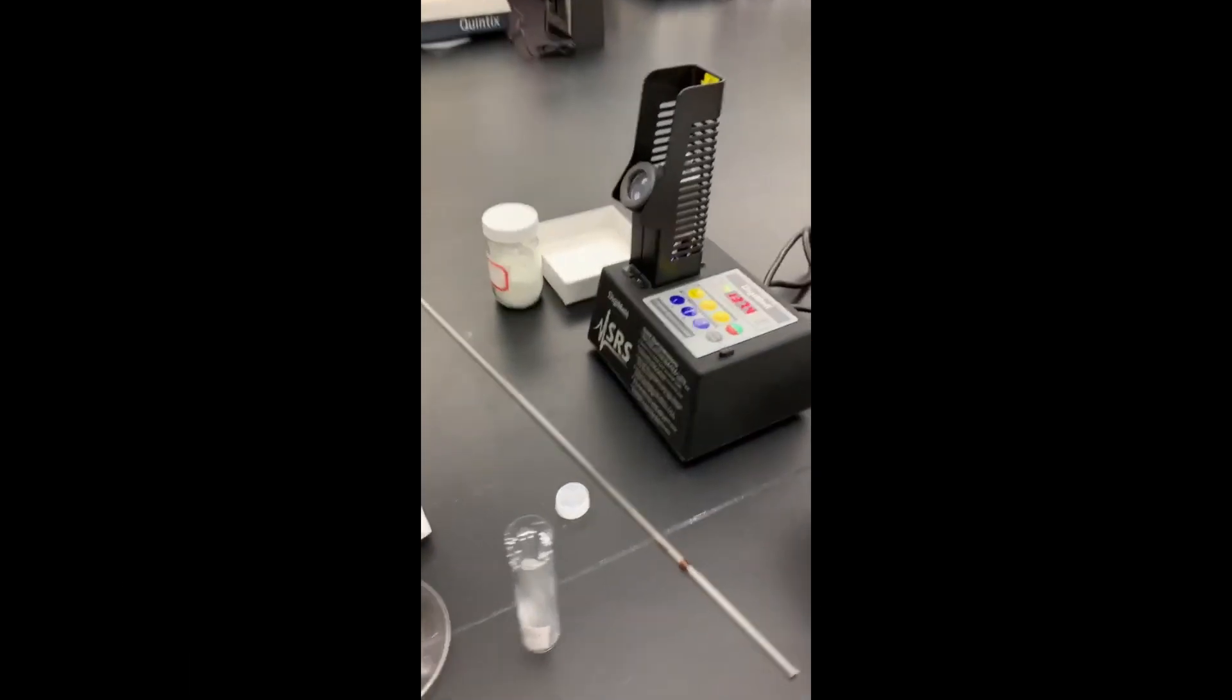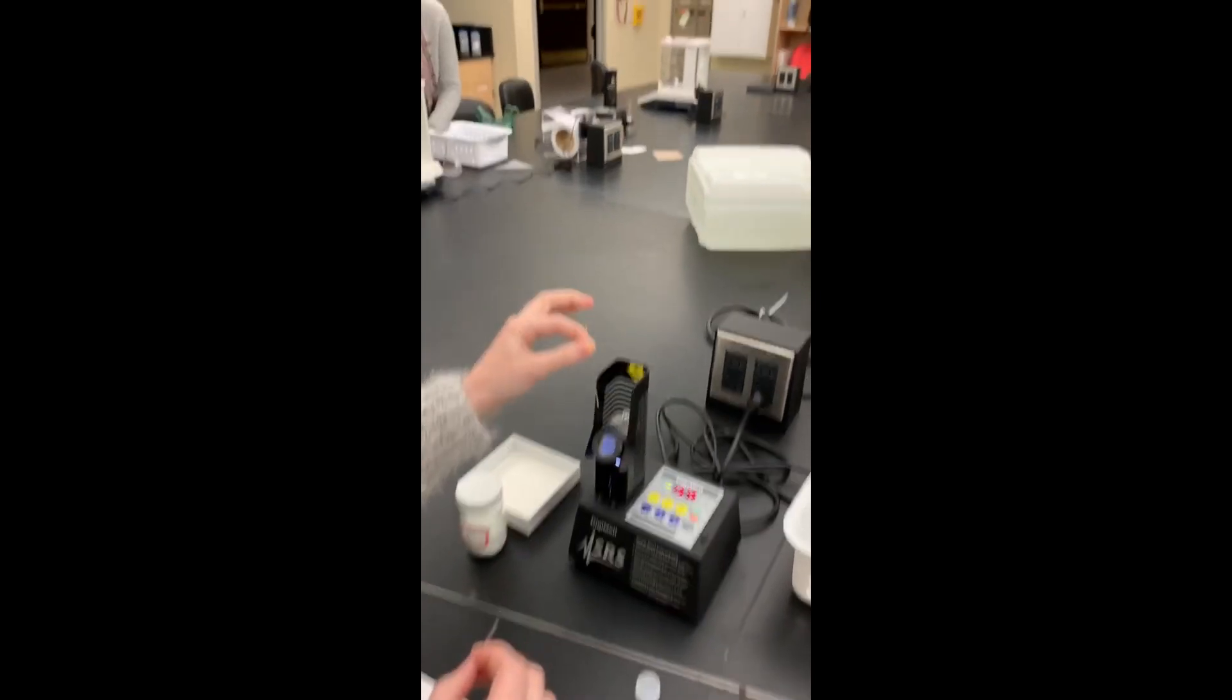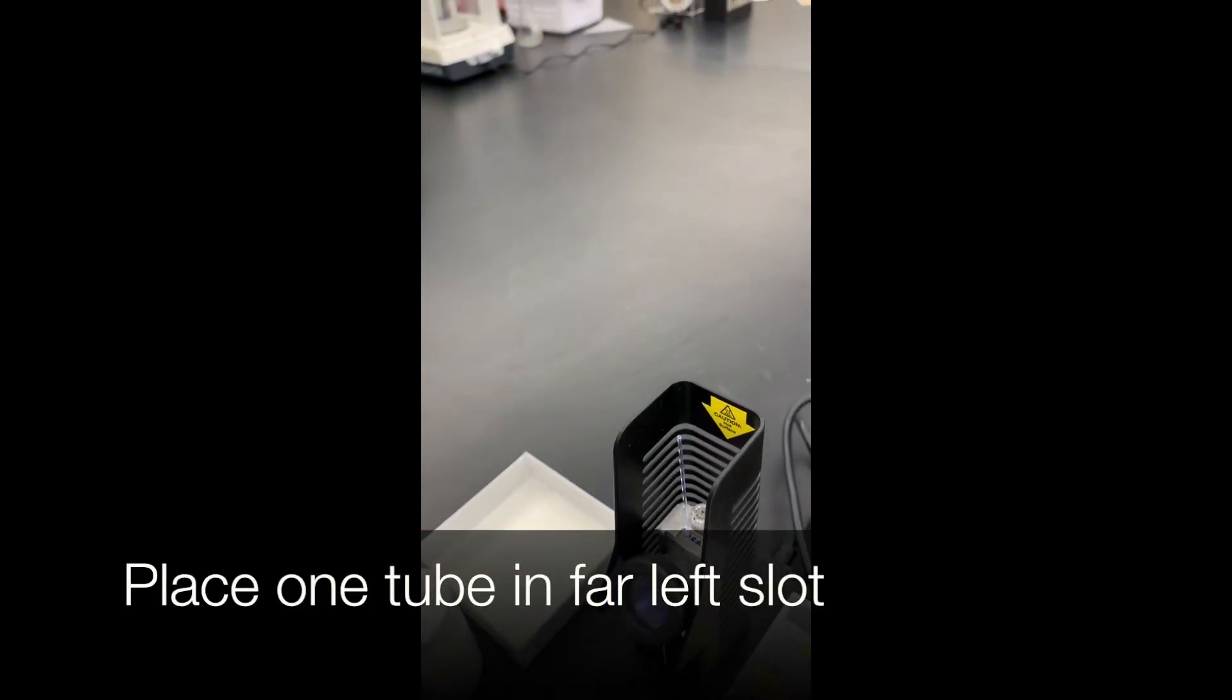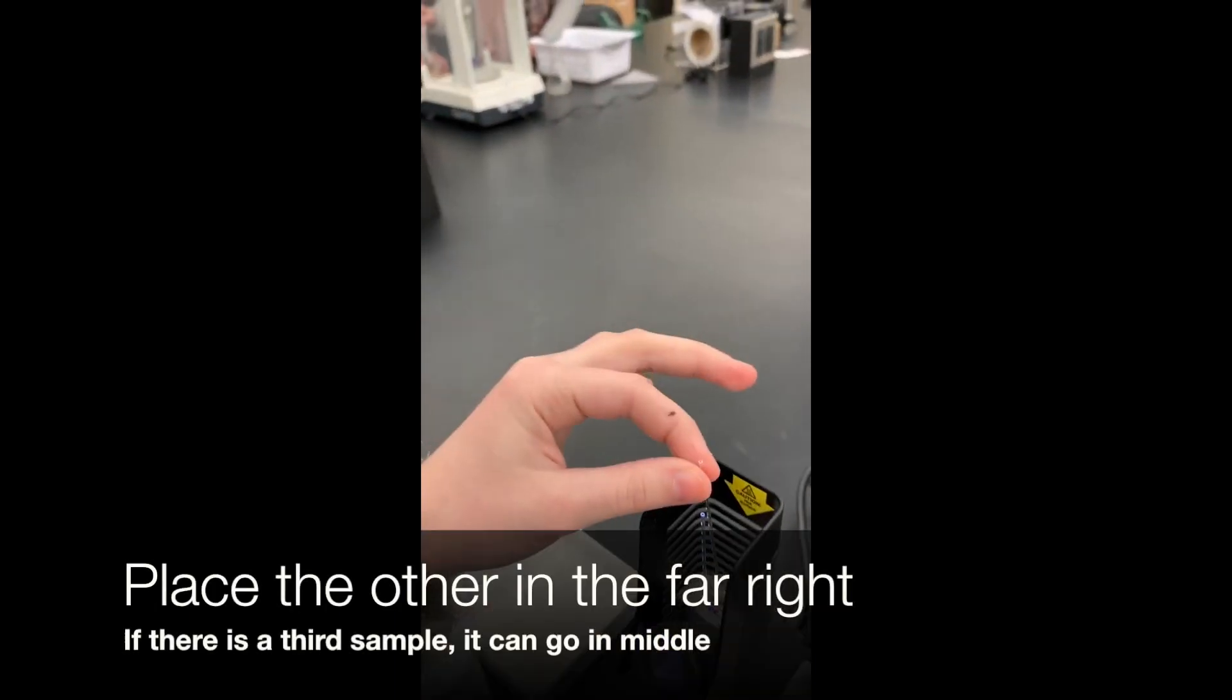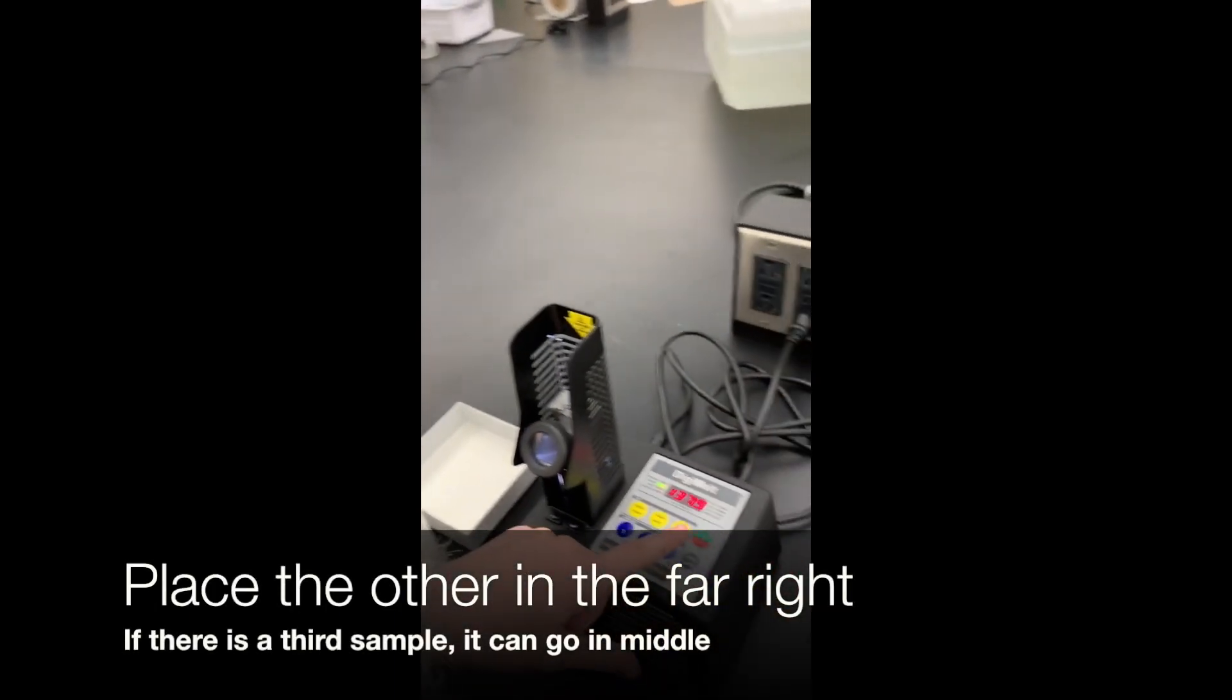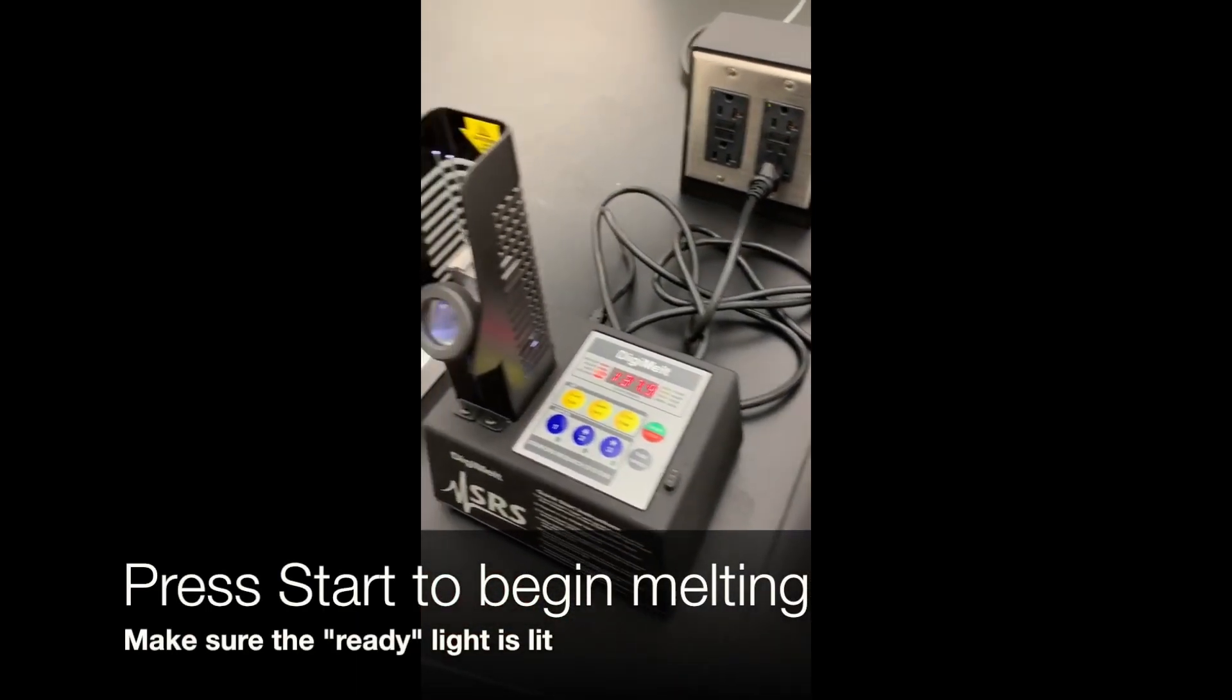Have a pen and paper ready for the next part. When the ready becomes lit on the melt temp apparatus, insert the capillary tubes into the oven. We will insert one on the far left and one on the far right so they are easier to view, but a third sample could be inserted in the middle. Once the samples are in there, press start to begin the ramp.